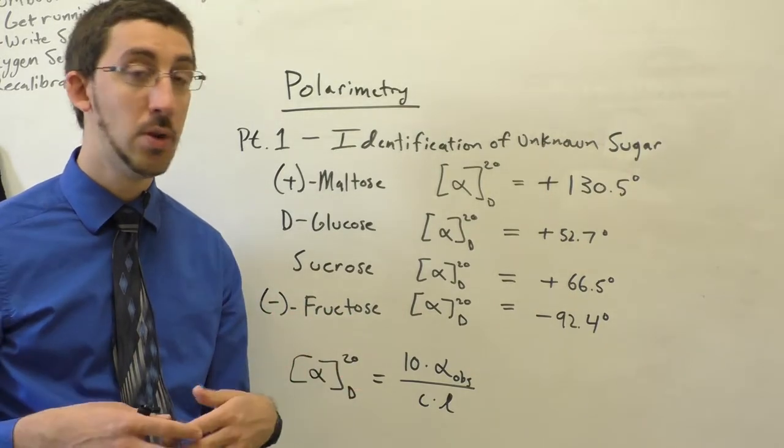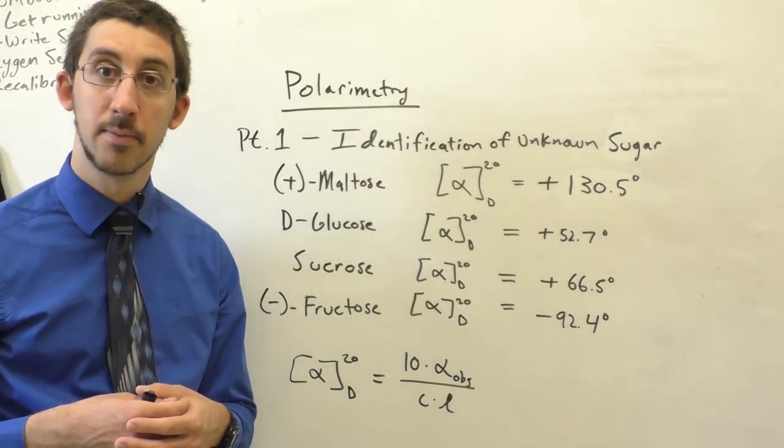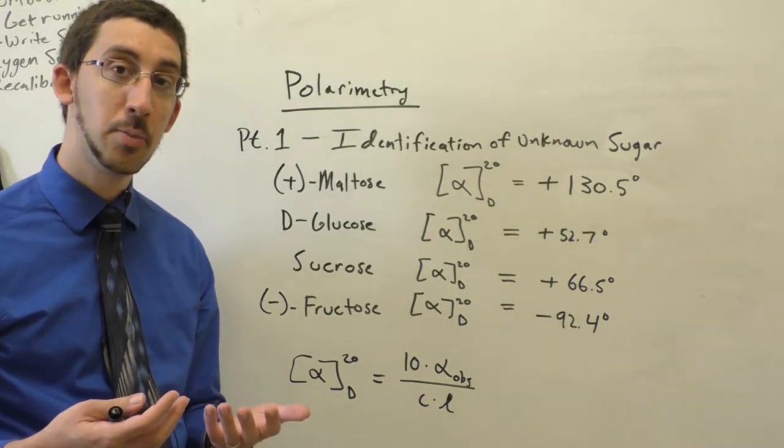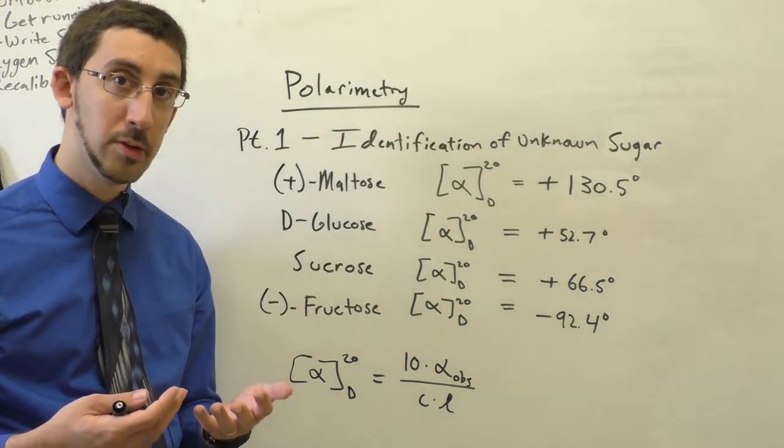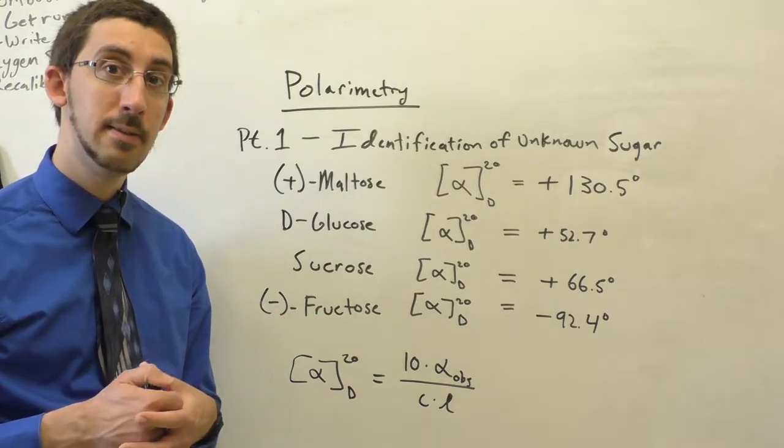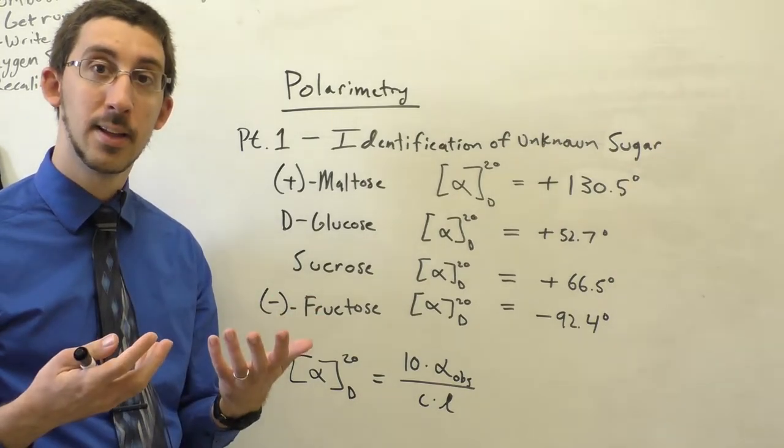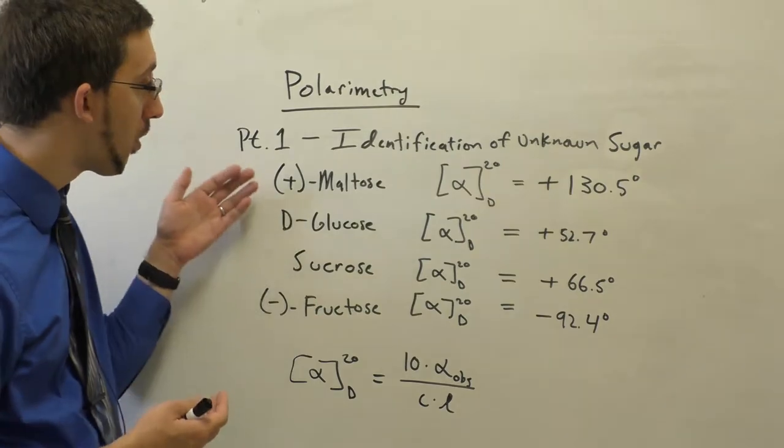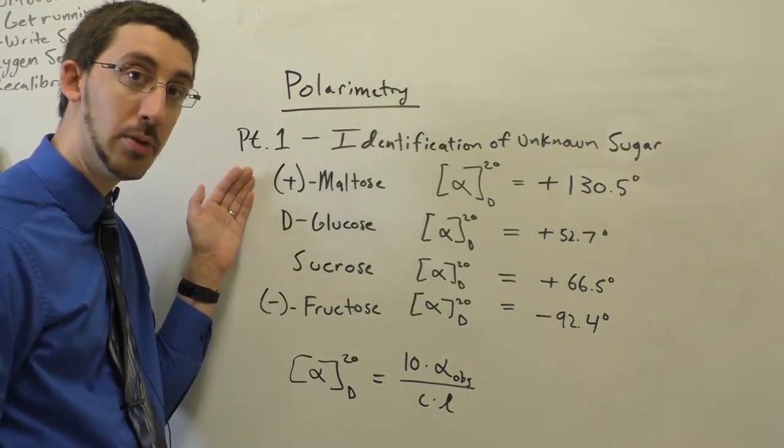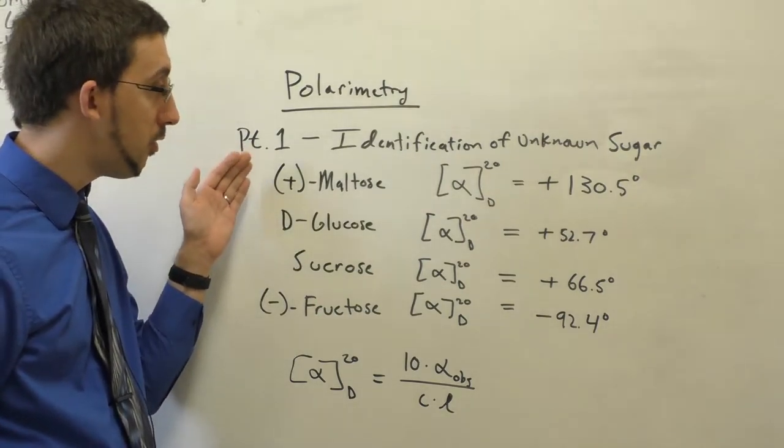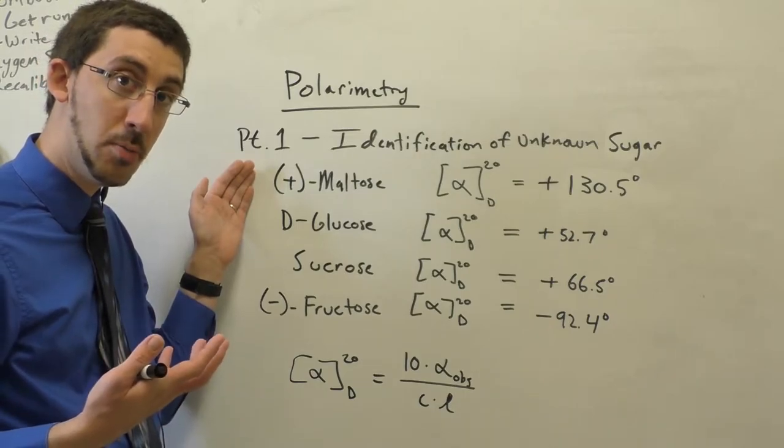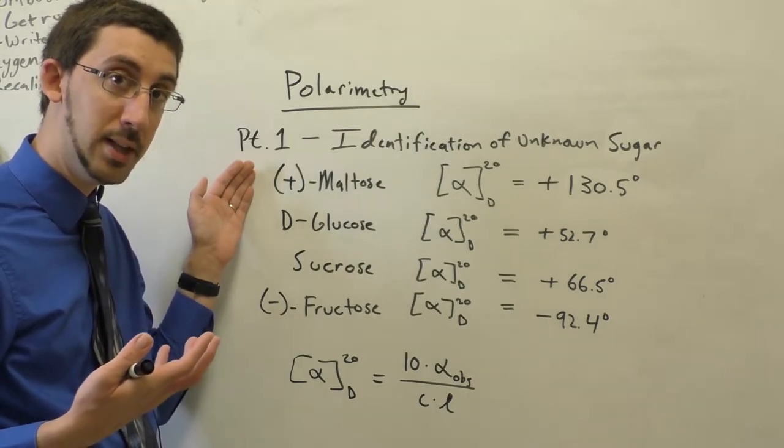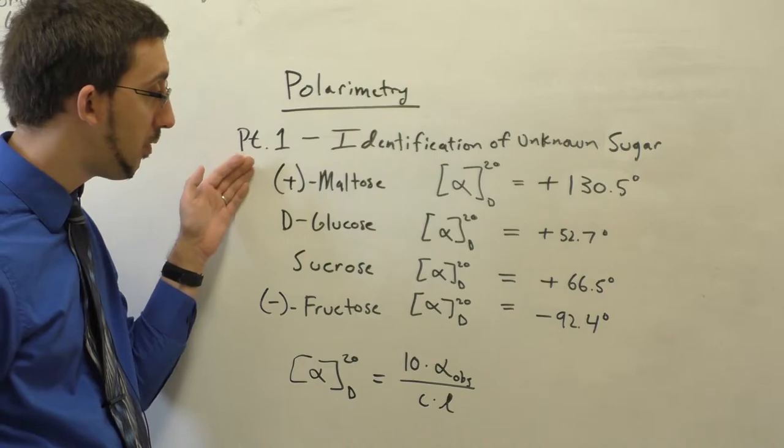A-chiral molecules do not rotate plane polarized light. In the first part of this experiment we're going to use polarimetry and that rotation of light to identify a white solid as one of these four sugar molecules. I have an unknown compound, an unknown white solid, and I want to identify it as one of these four sugars.